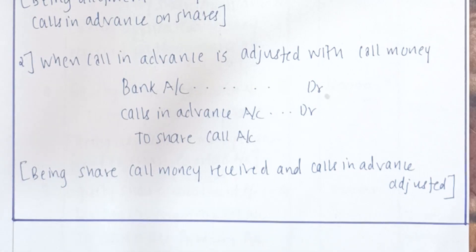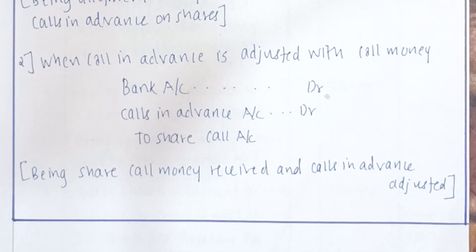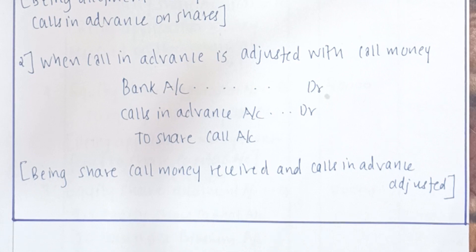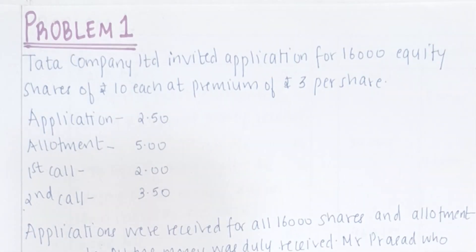The second case is when calls in advance is adjusted with the call money — it means it is paid with the call money. Here you will write: Bank Account debit, Calls in Advance Account debit, to Share First Call Account. And the narration is being share call money received and calls in advance adjusted.